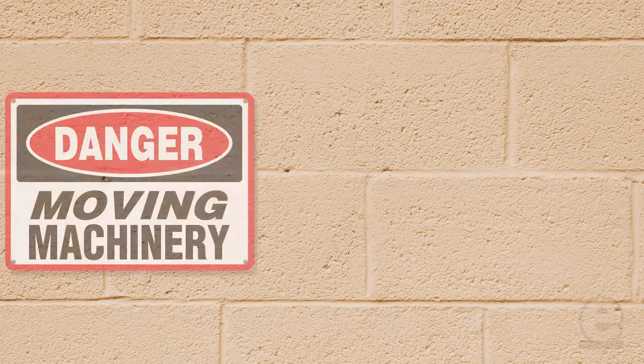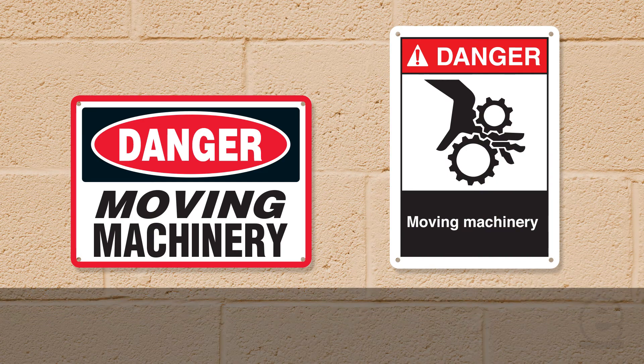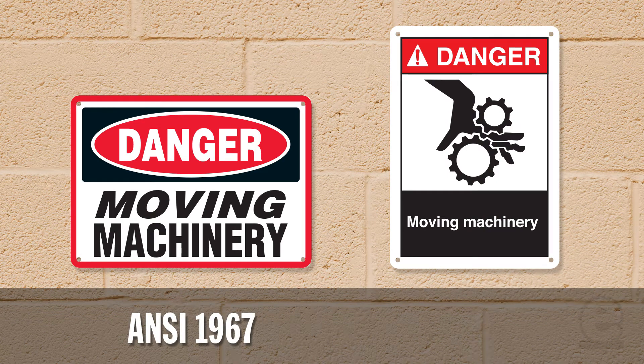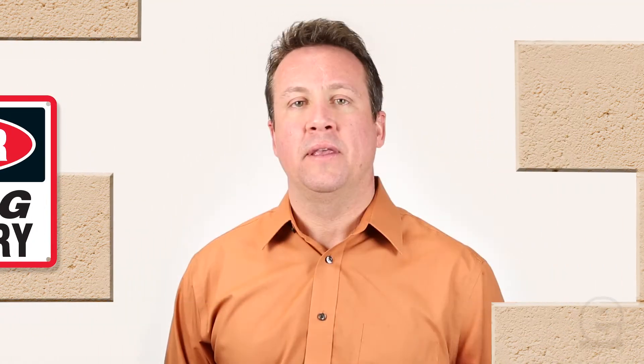This adoption gives employers the choice of which two existing sign formats they would like to use in their facility. There's the ANSI 1967 format or the new and improved ANSI 2011 format. Both of these sign formats are designed to communicate the same message, but let's take a closer look at what this new standard is.